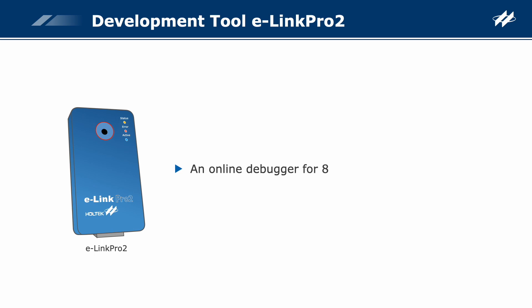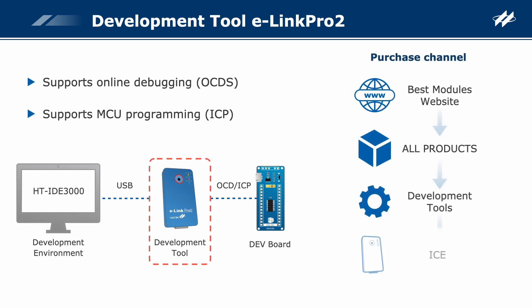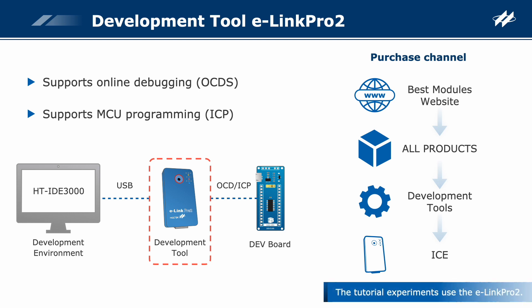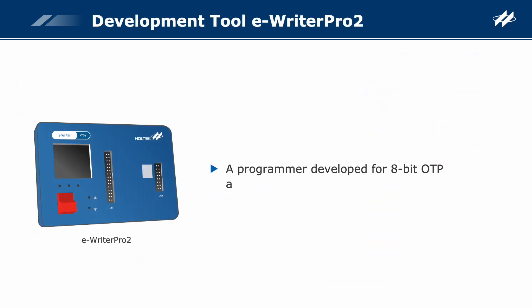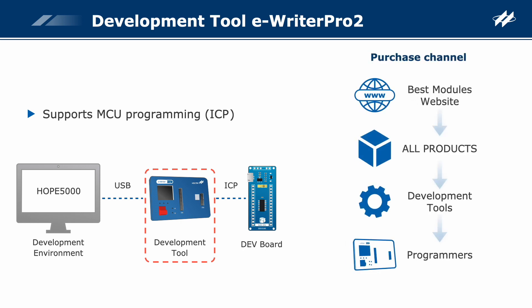The development tool E-Link Pro 2 is an online debugger developed by Holtec, dedicated for its new generation of 8-bit Flash MCUs with OCDS architecture. It supports online debugging and MCU programming. This tool can be purchased from the official website of Best Modules. The tutorial experiments all use the E-Link Pro 2. The development tool E-Writer Pro 2 is a Holtec-developed programmer dedicated for 8-bit OTP and Flash MCUs. It supports MCU programming and can be purchased from the official website of Best Modules.